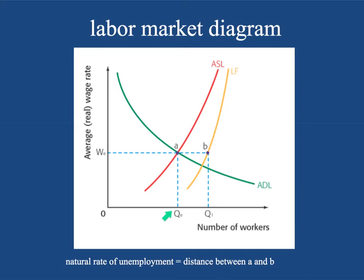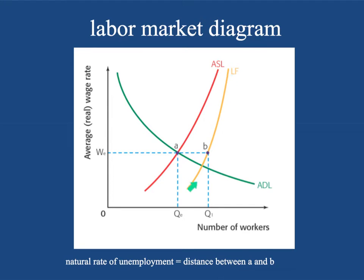The labor market diagram represents the relationship between the aggregate demand for labor — in this case firms looking to consume labor — and the aggregate supply of labor, the actual people who are taking the jobs. The labor force represents the total number of people in the workforce, including people of working age who may not be working. At the equilibrium wage rate and quantity of workers QE, there is a gap between A and B.